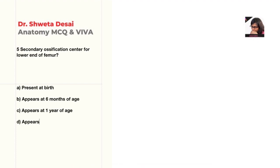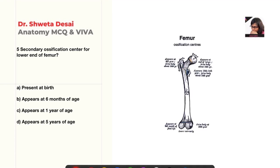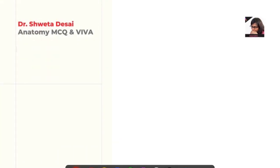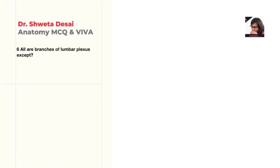Next: secondary ossification center for the lower end of femur — present at birth, appears at six months, one year, or five years of age? The ossification center at the lower end of femur develops at the ninth month of intrauterine life, so it is present at birth. Birth is the correct answer.